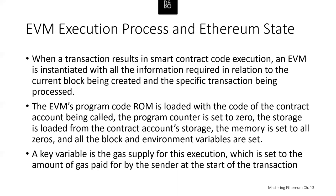So when a transaction results in smart contract code execution, the Ethereum virtual machine is instantiated with all the information required in relationship to the current block being created and the specific transaction being processed. In particular, the EVM's program code read-only memory is loaded with the code of the contract account being called. The program counter is set to zero, the storage is loaded from the contract account storage, the memory is set to zeros, and the block and environment variables are all set.